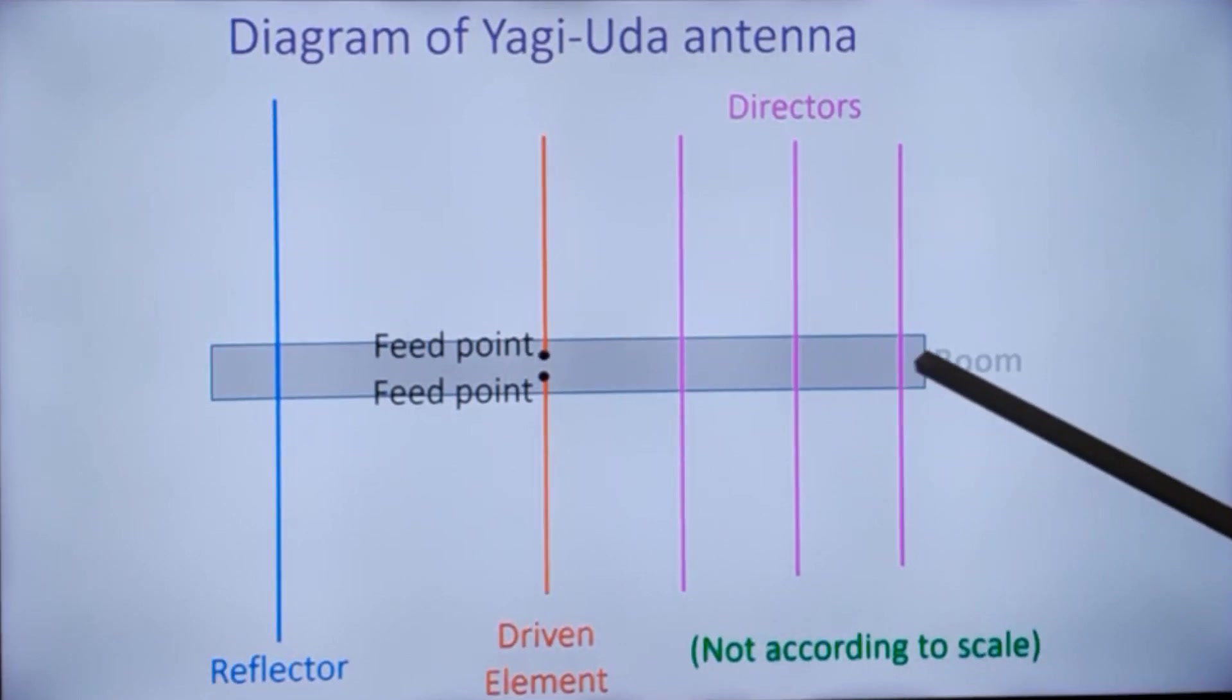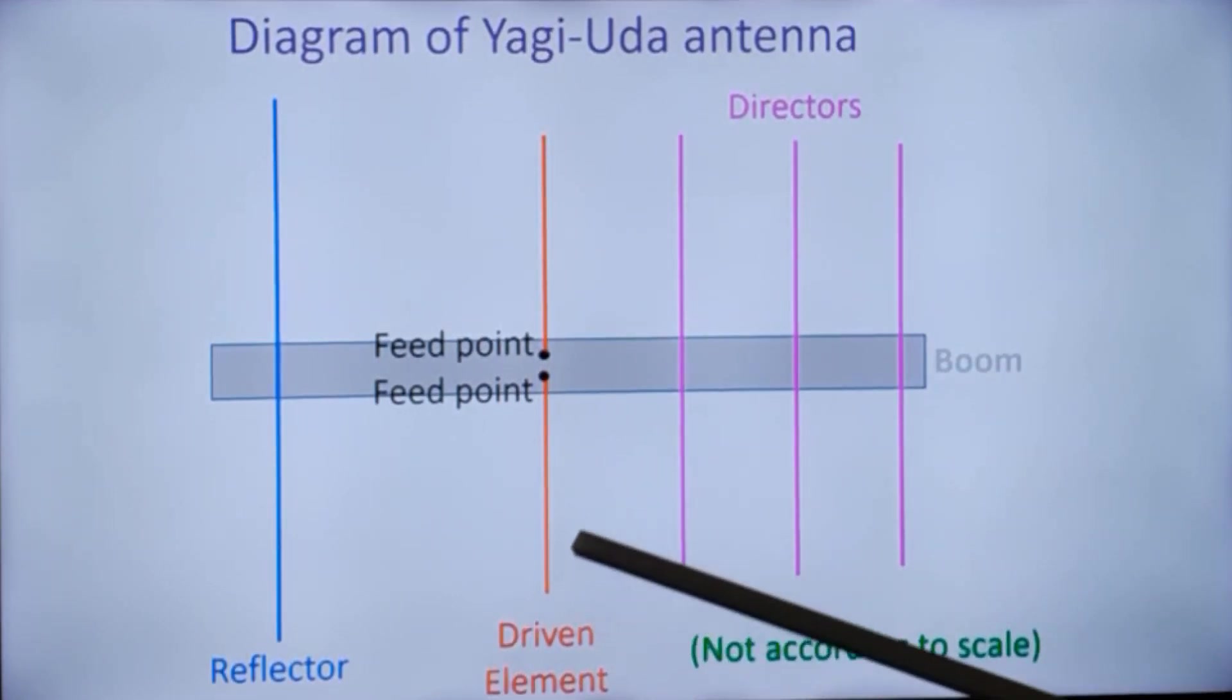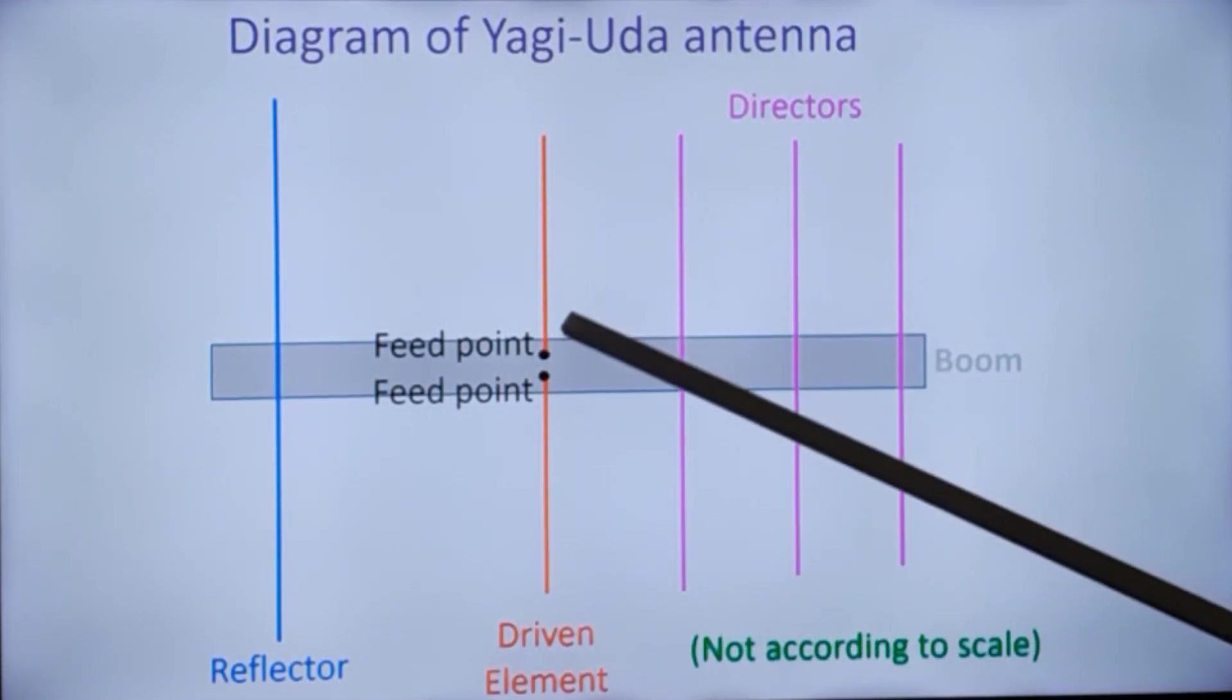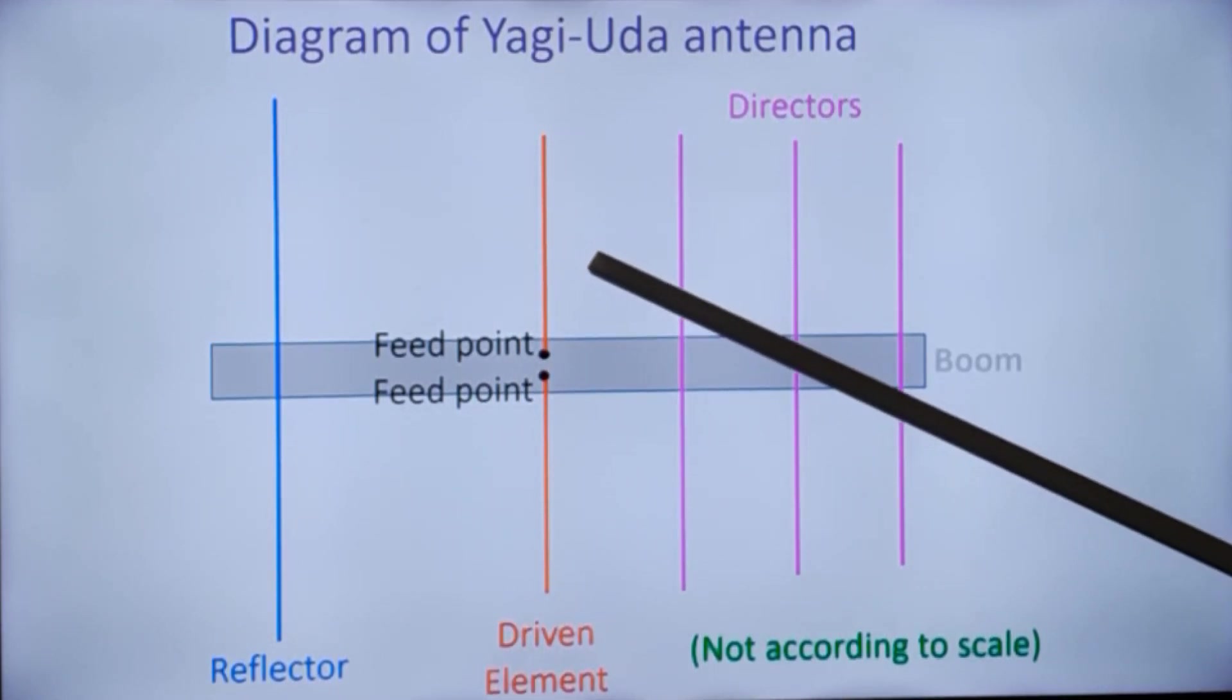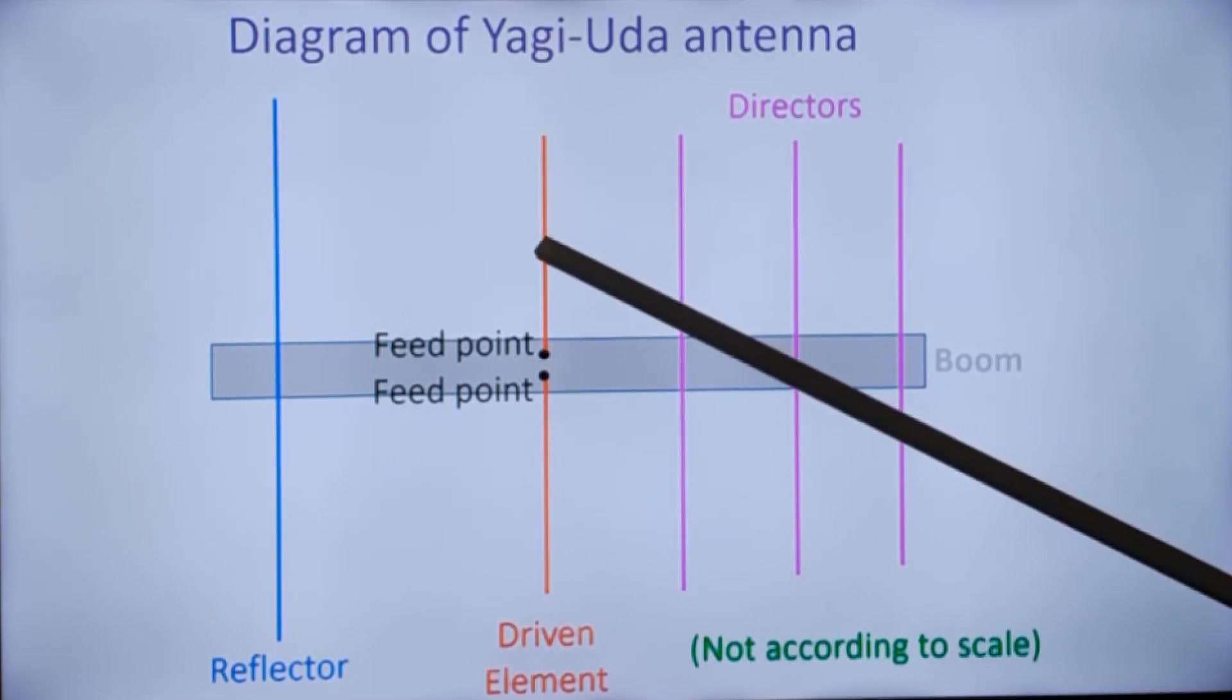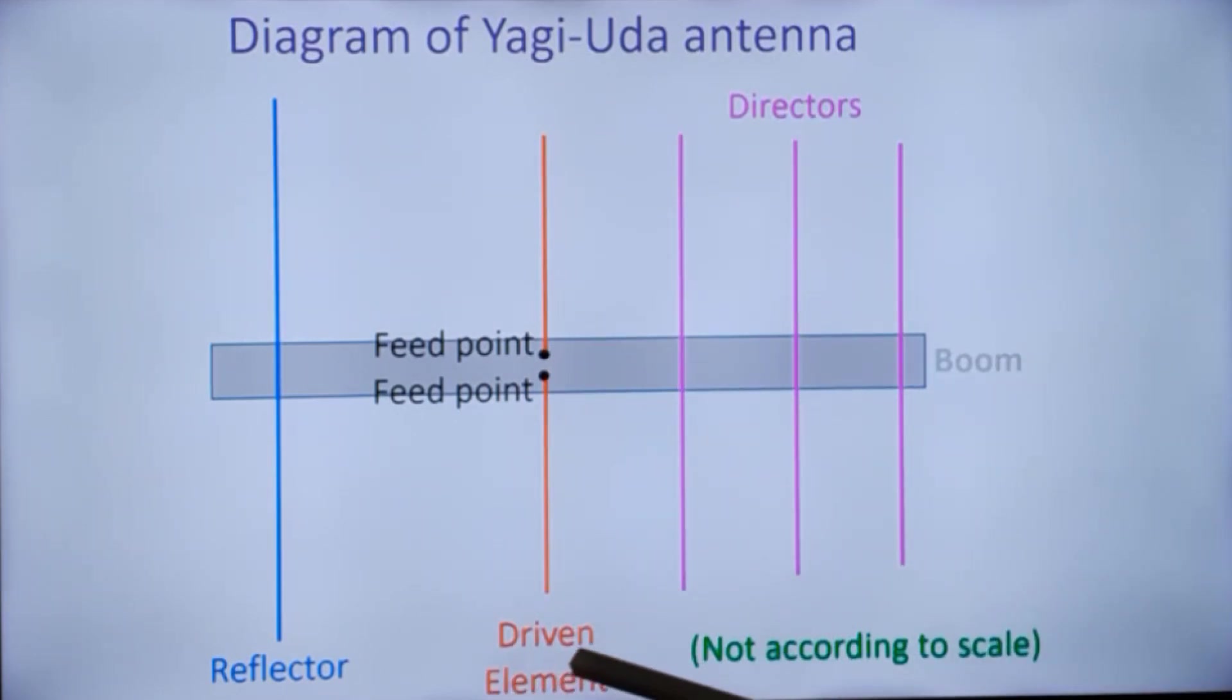The structure on which all the elements are mounted is known as the boom. The driven element is usually a dipole, a half wave dipole. One half of the half wave dipole will be half the wavelength of the required frequency, quarter-lambda. Together they will form a half wave dipole antenna.